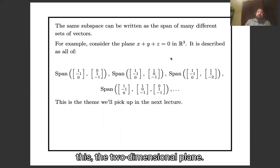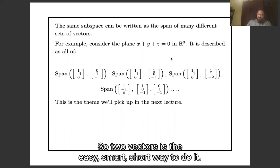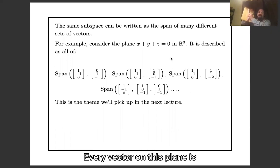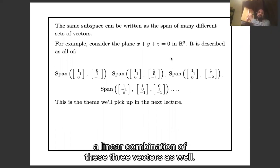This is a two-dimensional plane, so two vectors is the easy, small, short way to do it. But it could also be the span of three vectors. Every vector on this plane is a linear combination of these three vectors as well.